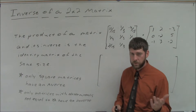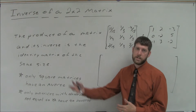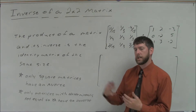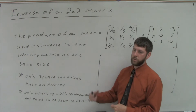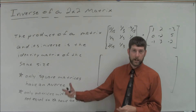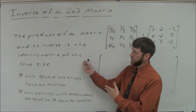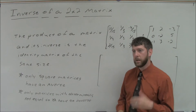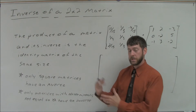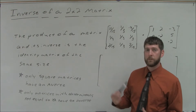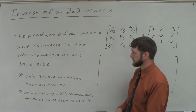The additive inverse — 3 plus negative 3 is 0. So an inverse is anything that you combine using the appropriate operation to result in the appropriate identity. Multiplicative inverses give you 1, or the identity matrix if we're talking about matrices. Additive inverses give you 0, or the zero matrix if you're talking about matrices.